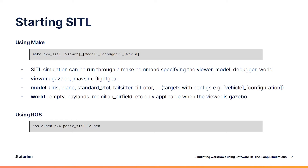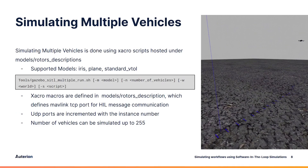The simulation can be run through a make command by specifying the viewer, which is the simulator, the configuration of the vehicle, which includes models as well as sub-configurations of the models, and the world in which the vehicle will be simulated. PX4 also supports running software-in-the-loop simulations through ROS.